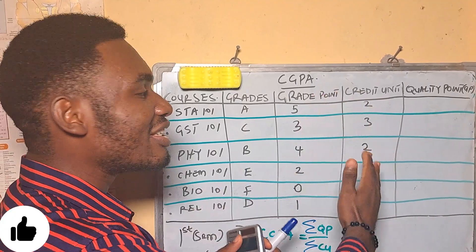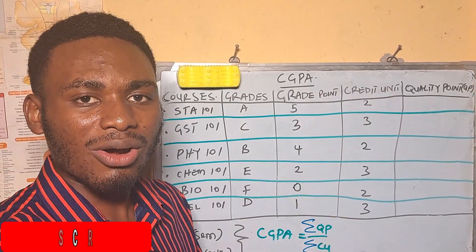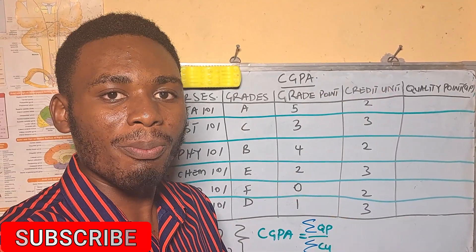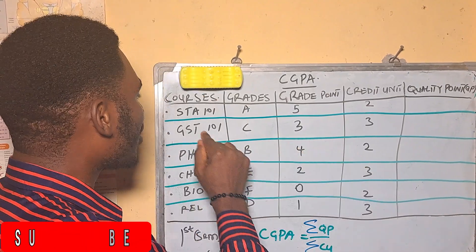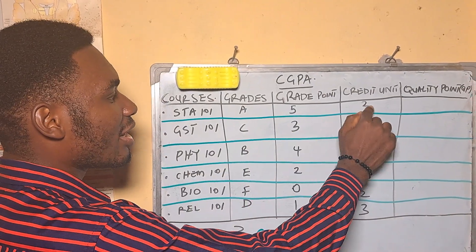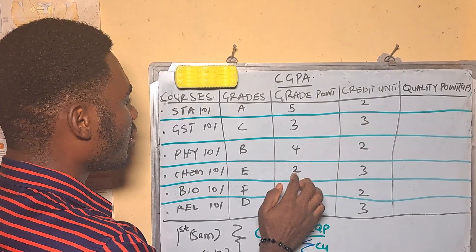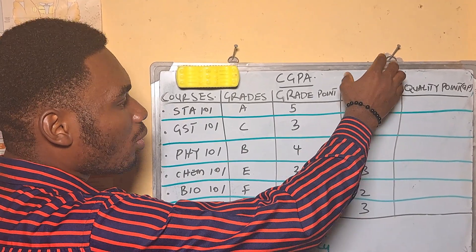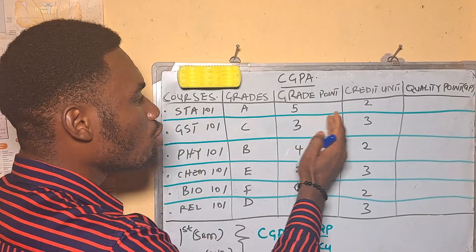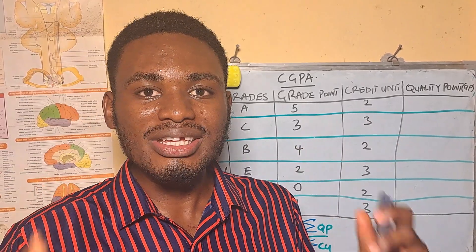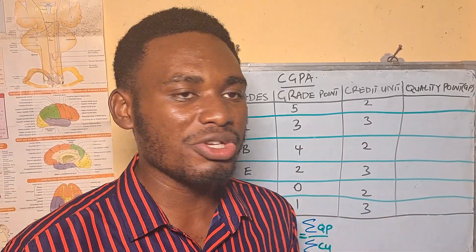The next column is going to have your credit units. This credit unit is peculiar to a particular course — each course will have a number of credit units. For example, Statistics here had a credit unit of 2, and GST had a credit unit of 3. Having these five columns will make it very easy for you to calculate your CGPA.